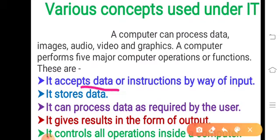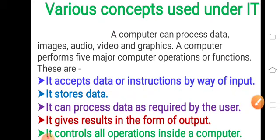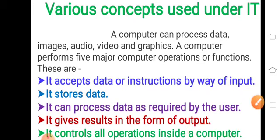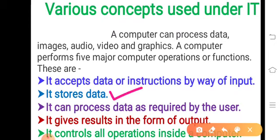The first operation: it accepts data and instructions by way of input. We can provide information or commands to the computer system through various input devices like keyboard, mouse, scanner, and touchpad. The input can be in various forms — data as raw material, an image file, a sound clip, or a video. The second operation: once the computer accepts the input, it stores that data — meaning it saves it in the computer system.